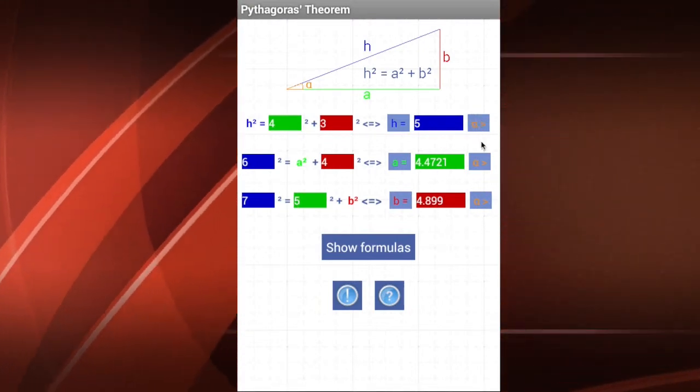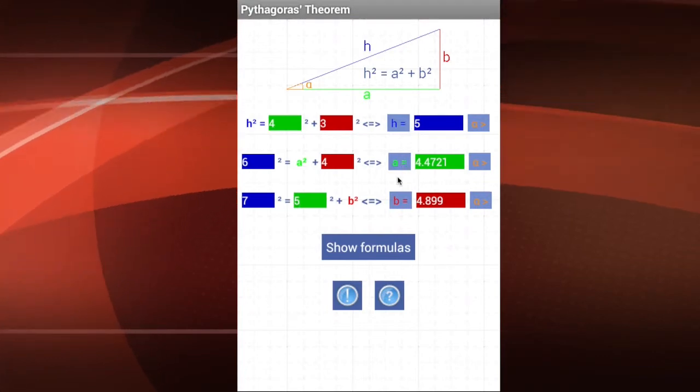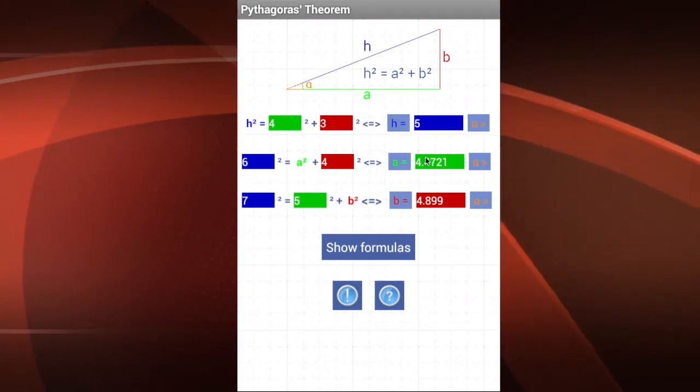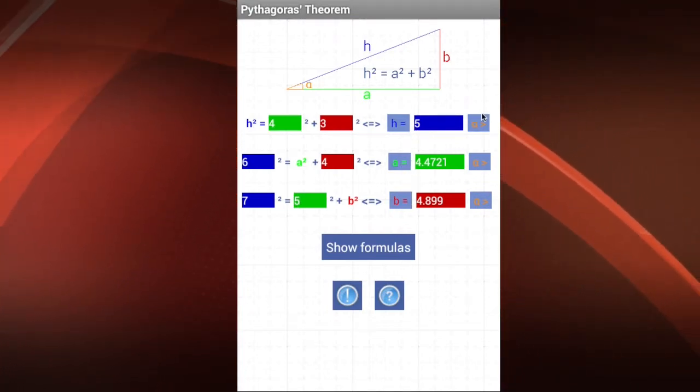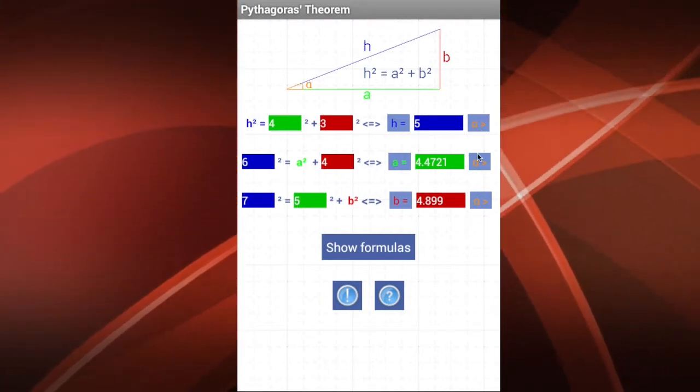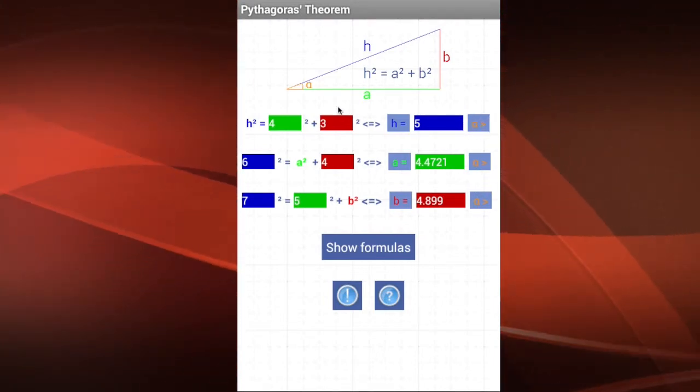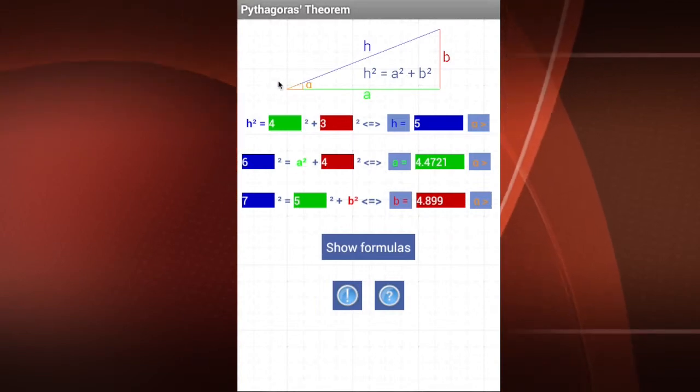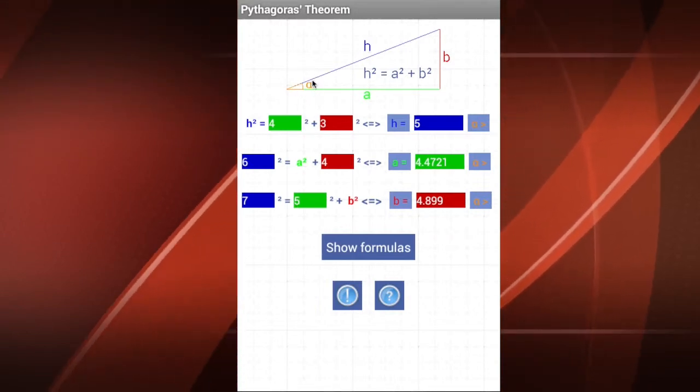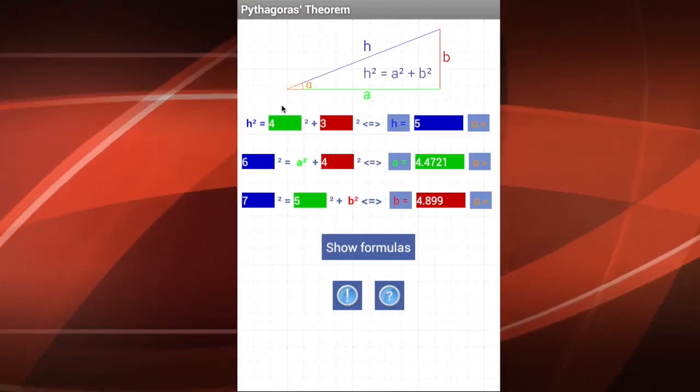Now see that after I calculated each of these lines, this button here appears now in orange. It means that I can find more things. For instance, I want to know the value of this angle here, alpha, in orange.